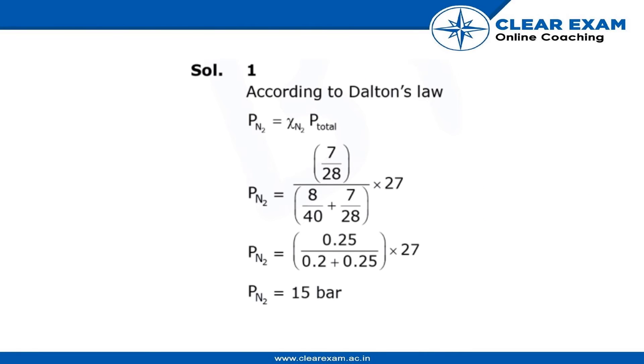According to Dalton's law, partial pressure will be XN2 multiplied by P total. So partial pressure will be 7 by 28 divided by this into 27. PN2 is equal to 0.25 divided by 0.2 plus 0.25 times 27.